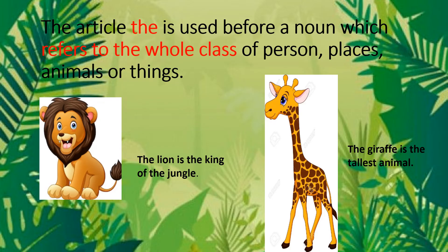While the articles 'a' and 'an' are used before a singular noun, the article 'the' is also used before a plural noun. The article 'the' is used before a noun which refers to the whole class of persons, places, animals, or things. For example: 'The lion is the king of the jungle' — here, 'lion' refers to all the lions in the world. Similarly, 'the giraffe is the tallest animal' — here, 'giraffe' refers to all the giraffes. So we use 'the' before a noun that refers to an entire group of its kind.